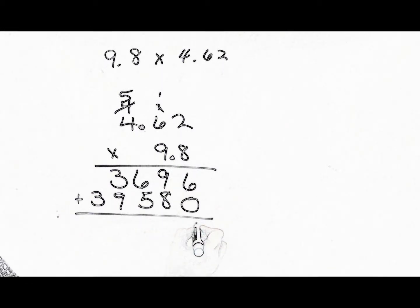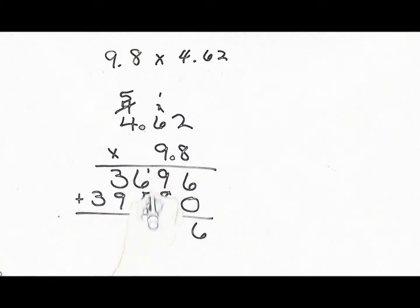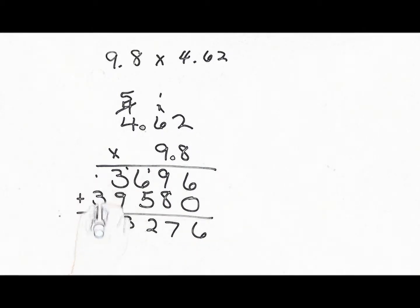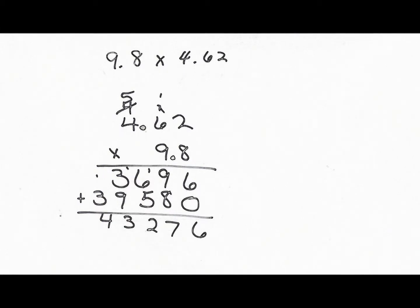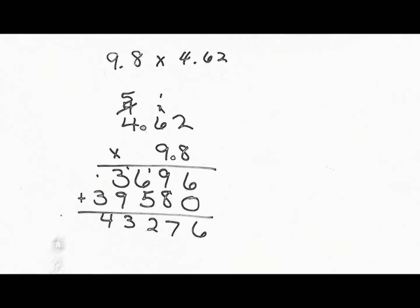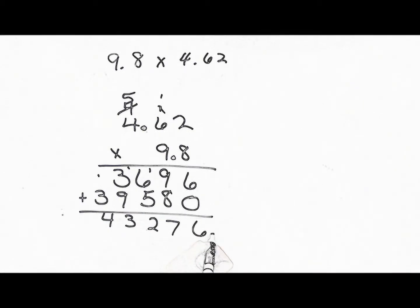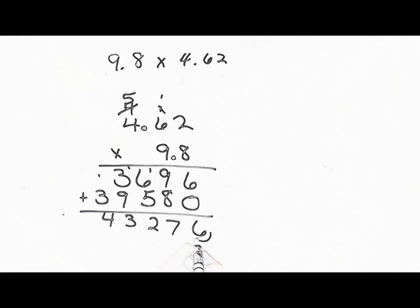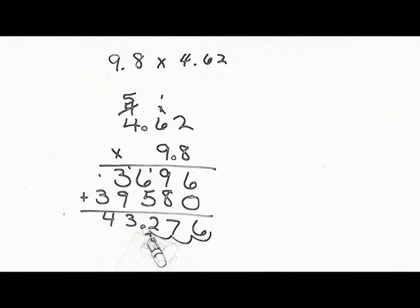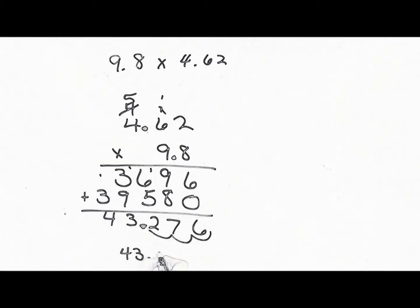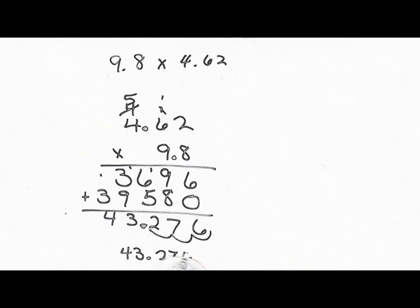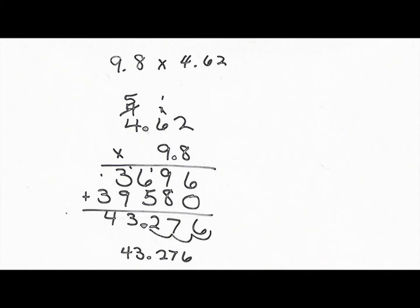We add these two lines. That's 12, 13, and 4. Again, we look at the digits on the right side of the decimal. 1, 2, 3. Come down to our answer to the far right and take three hops. So, the answer is 43.276 and that's multiplying decimals.